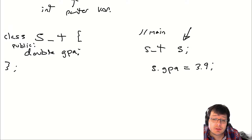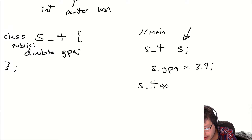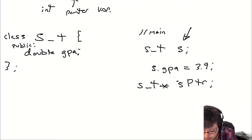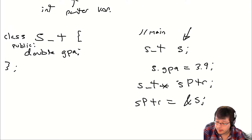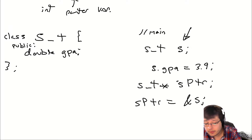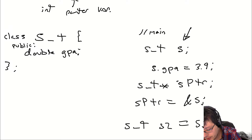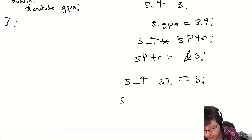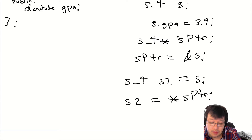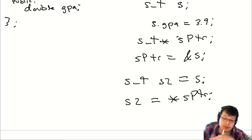What if we wanted to make a pointer to an object? You just do the same thing — throw in the asterisk — and you could name it something like sptr. If you wanted to point to s, you can do `sptr = &s`, and that will store the address of s in sptr. If I wanted to copy s into another variable s2, I could do `s2 = *sptr` — not address-of, but the dereference, because sptr is a pointer.